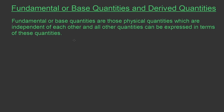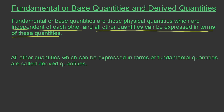So there are two characteristics for a fundamental or base quantity: first, they are independent of each other; and second, all other quantities can be expressed in terms of these quantities. Derived quantities are all other quantities which can be expressed in terms of fundamental quantities.